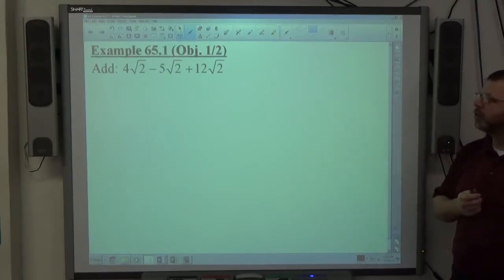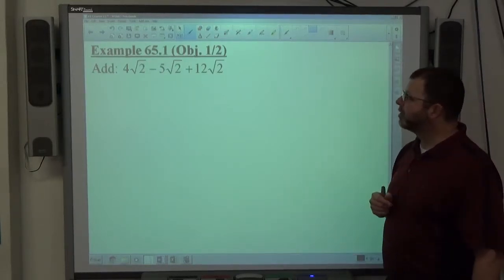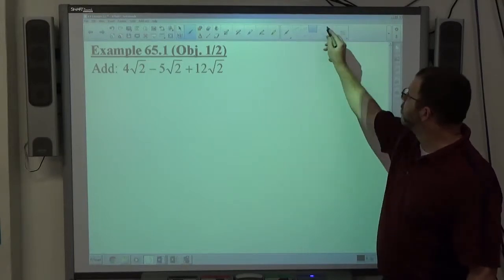So example one on your sheet, we're supposed to add 4 square root of 2 minus 5 square root of 2 plus 12 square root of 2.